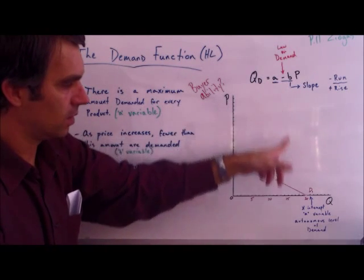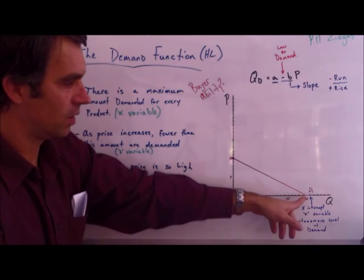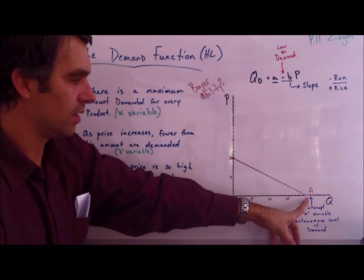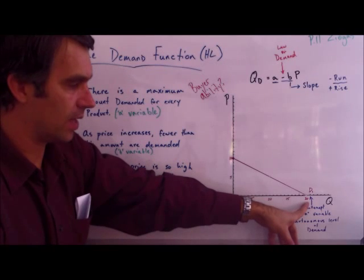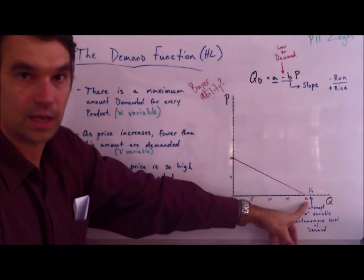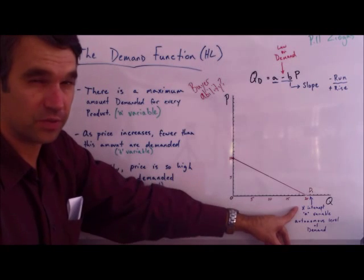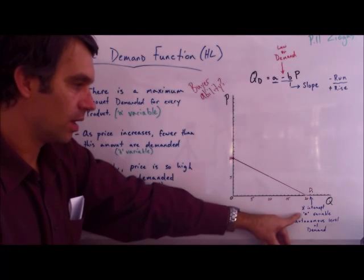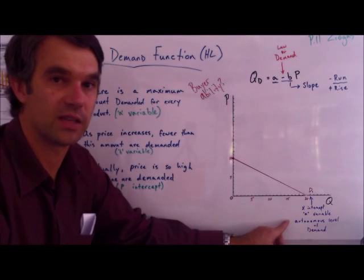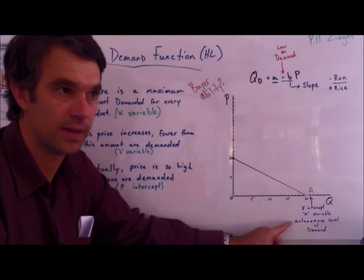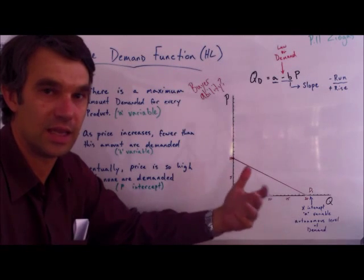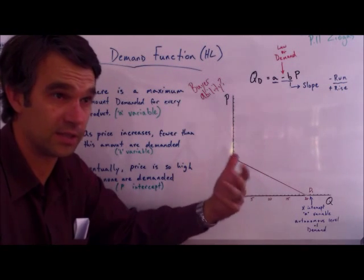The 'a' variable is where the demand curve intersects or intercepts the Q-axis. We can see right here that it intercepts it at 20, so this would be an x-intercept if you want to see it that way. We also have a name for it — it's called the autonomous level of demand.